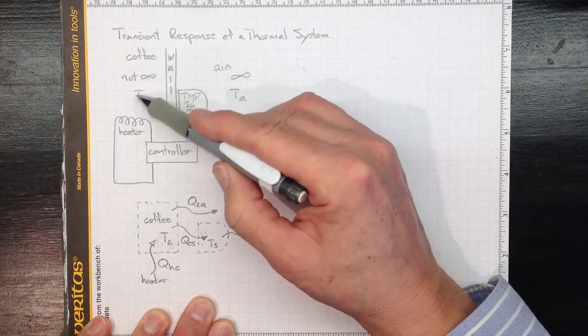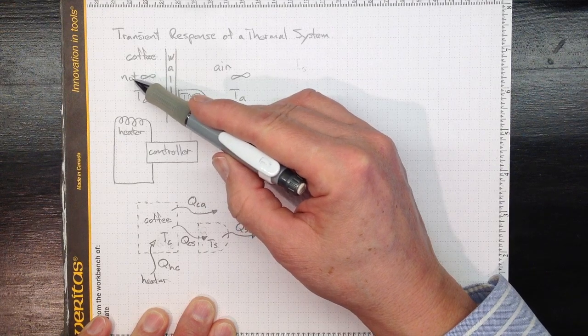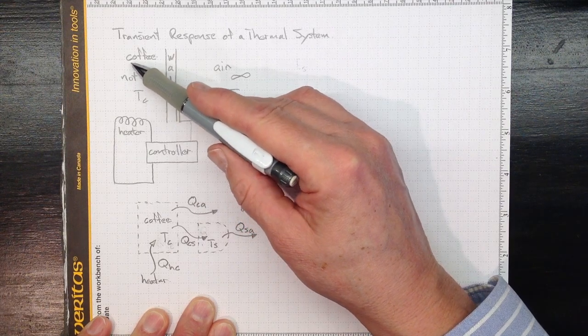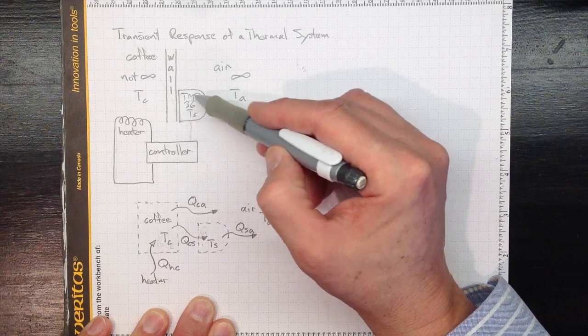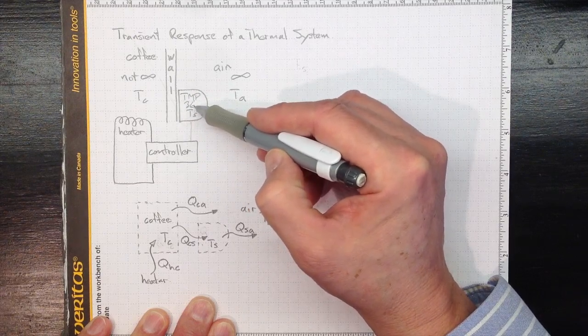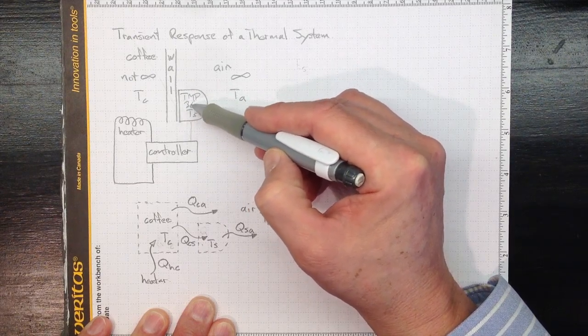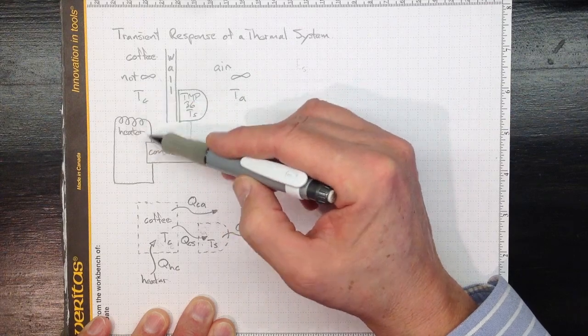This time though our sensor we're reading the temperature with our microcontroller and using that microcontroller to turn a heater on and off to try to keep the coffee or the 3D printer bed warm enough to match a temperature that we'd like it to be at, and we're using the sensor input to control that heater and turn it on and off.